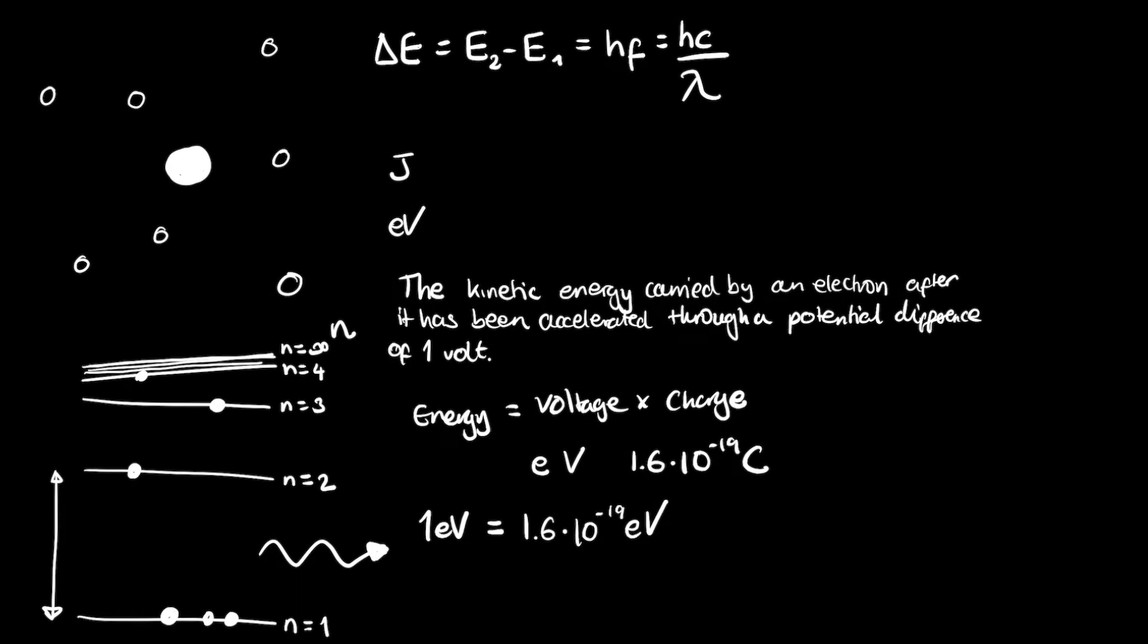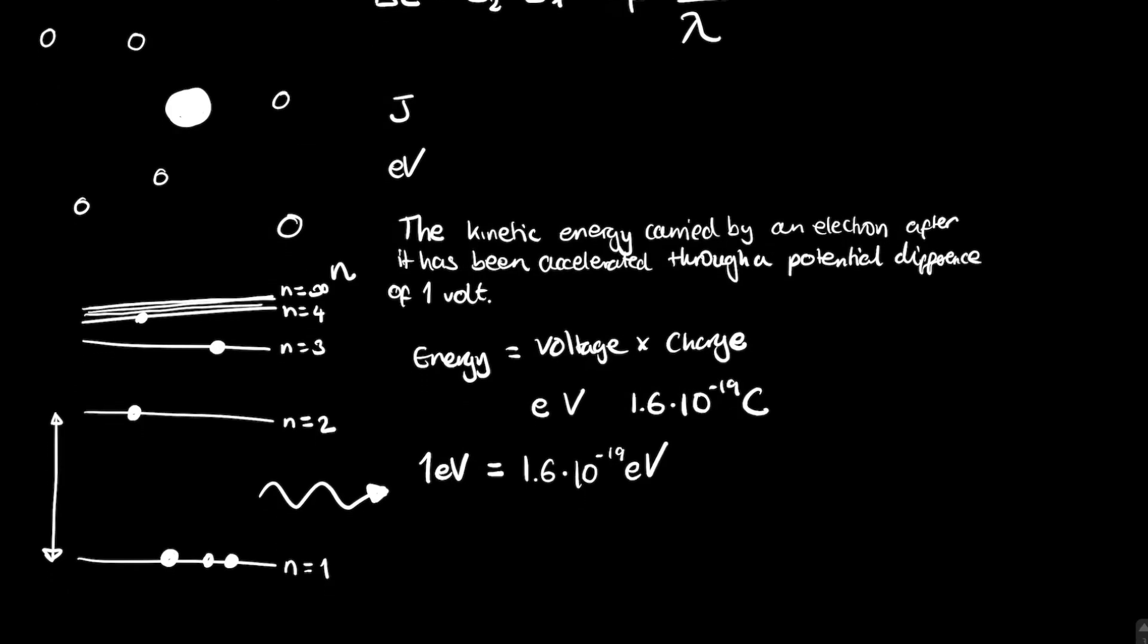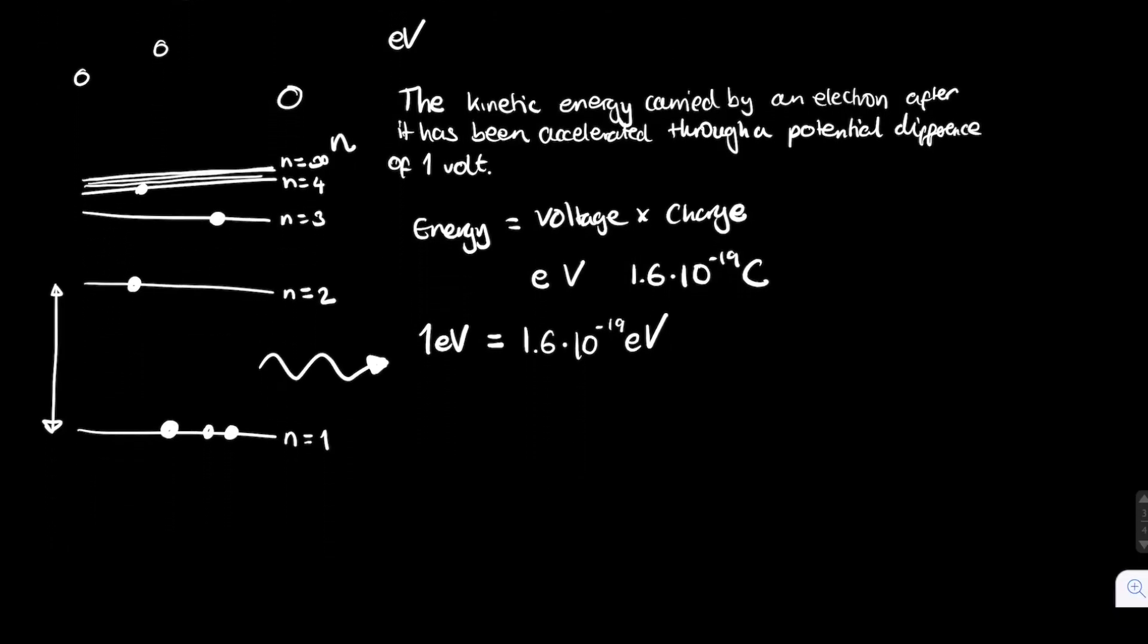So what are the consequences of the fact that electrons can only exist in discrete energy levels? Well, these lead to what's called emission spectra or line emission spectra.